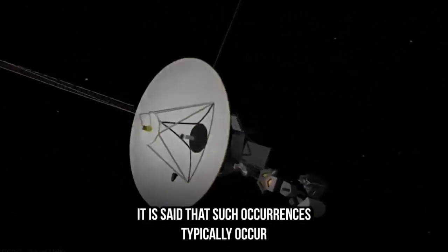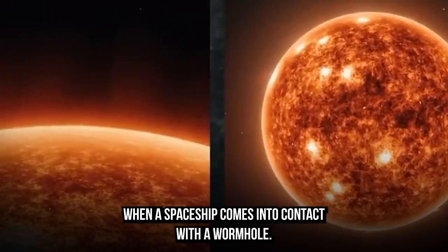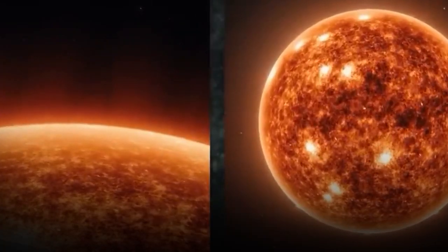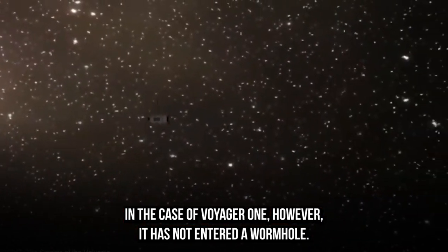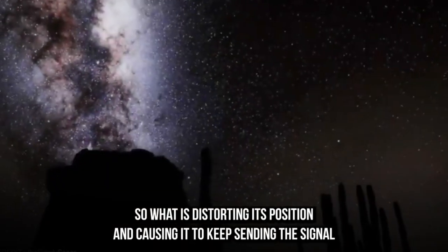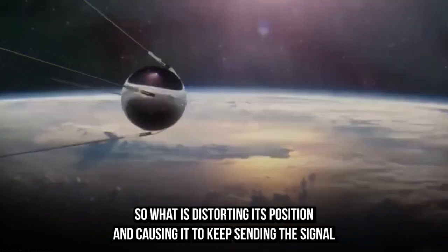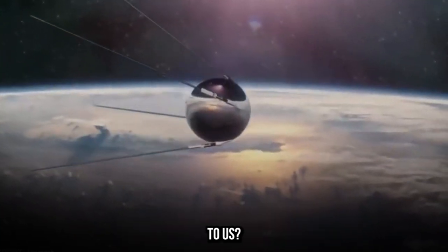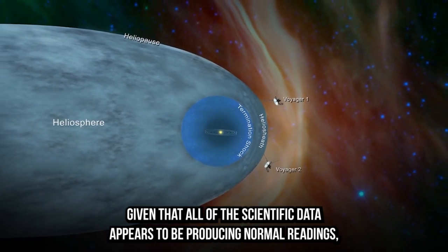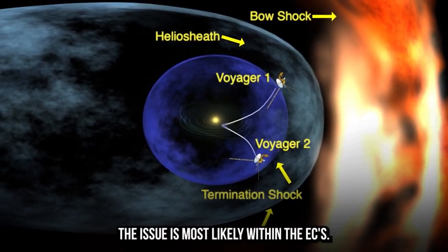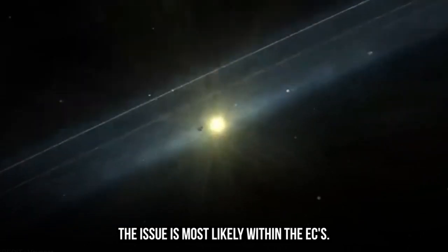It is said that such occurrences typically occur when a spacecraft comes into contact with a wormhole. In the case of Voyager 1, however, it has not entered a wormhole. So what is distorting its position and causing it to keep sending the signal? Given that all scientific data appears to be producing normal readings, the issue is most likely within the AACS.